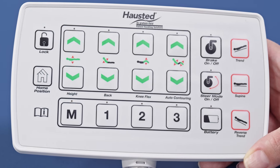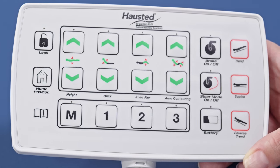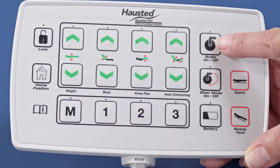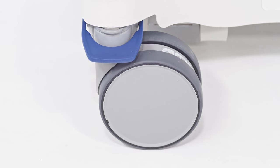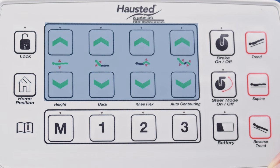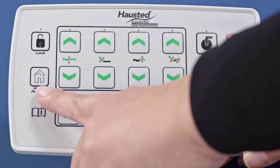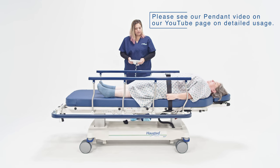The intuitive hand pendant puts all stretcher functions at your fingertips. Brake, steer, height, and positioning presets are located on the easy-to-understand pendant. A home preset allows for quicker entrance and exit from the stretcher.